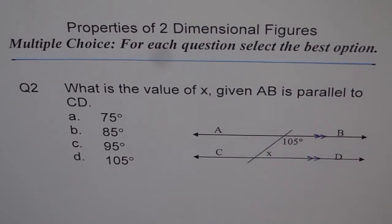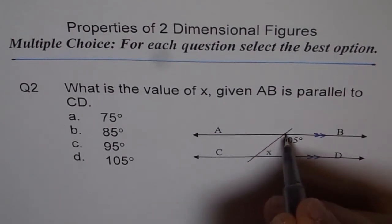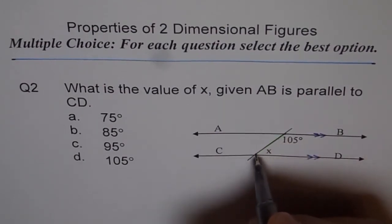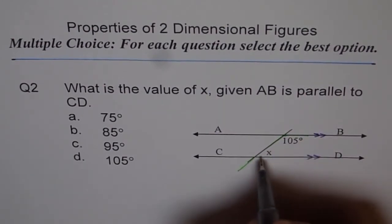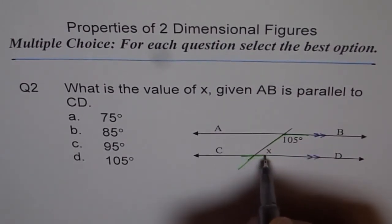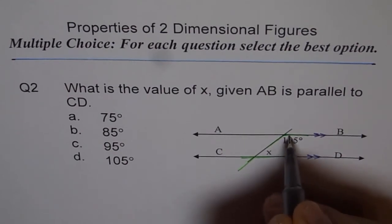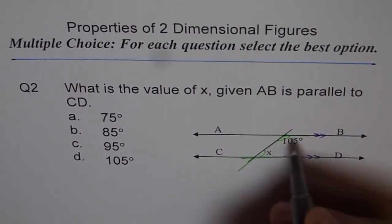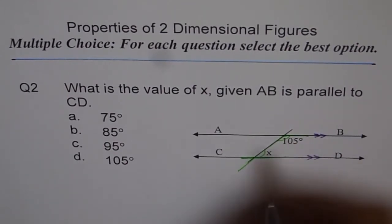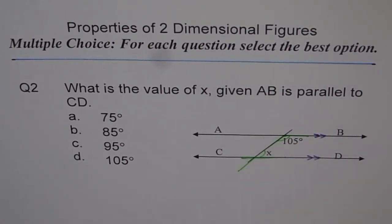Do you see this? Look at this shape carefully — it forms an F. Now these two angles are on the same side, and they always add up to 180 degrees.